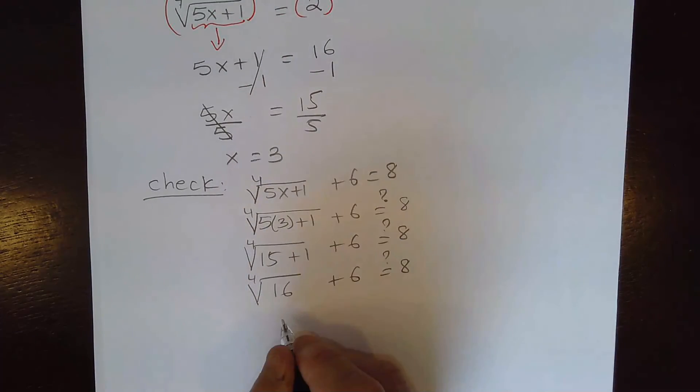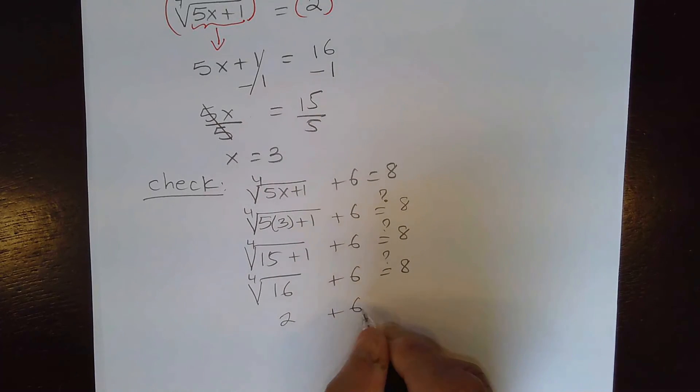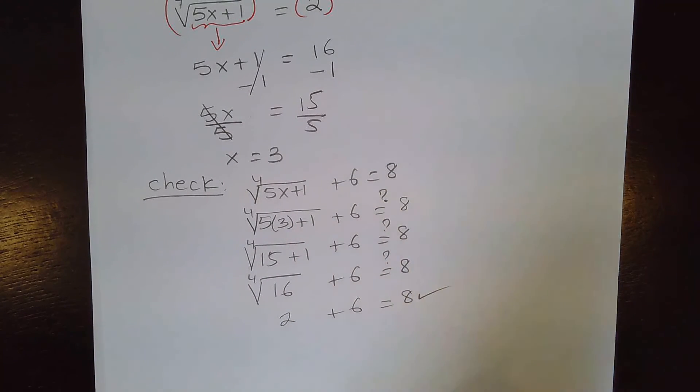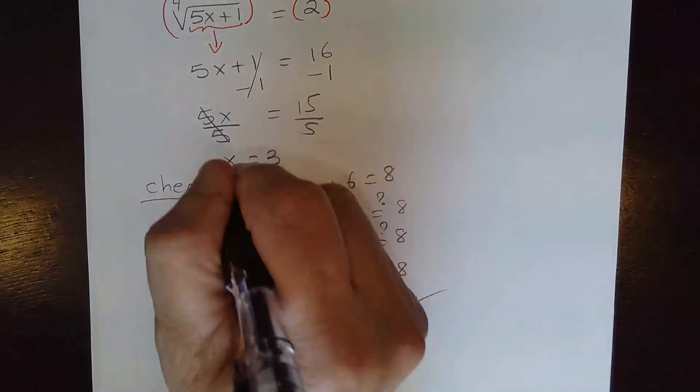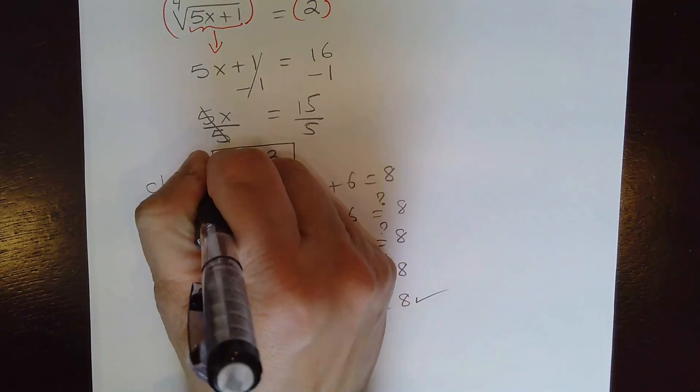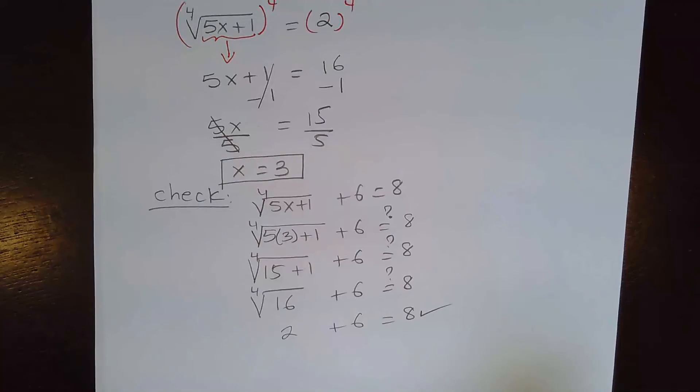The 4th root of 16 is 2. 2 plus 6 is equal to 8. So this checks. 2 plus 6 is 8. Both sides are equal. So the solution of the radical equation is x equal to 3.